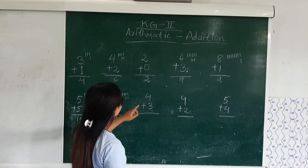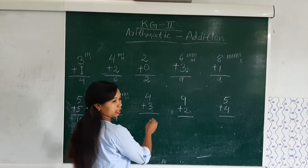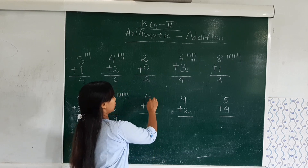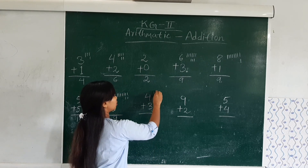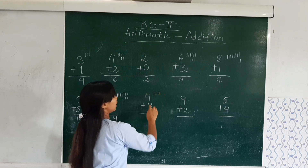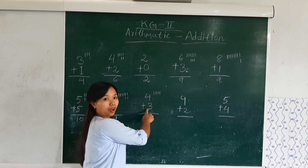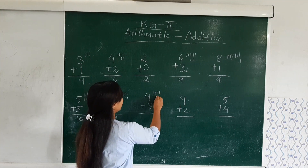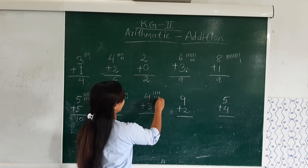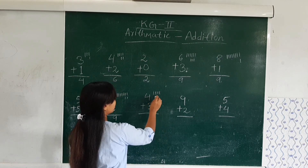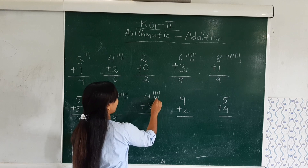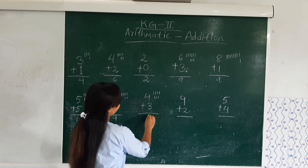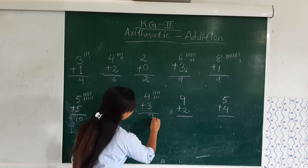Now the next one: 4 plus 3. We will merge 4 times: 1, 2, 3, 4. Here we have 3: 1, 2, 3. Now we will count all together: 1, 2, 3, 4, 5, 6, 7. So here we have the result 7.